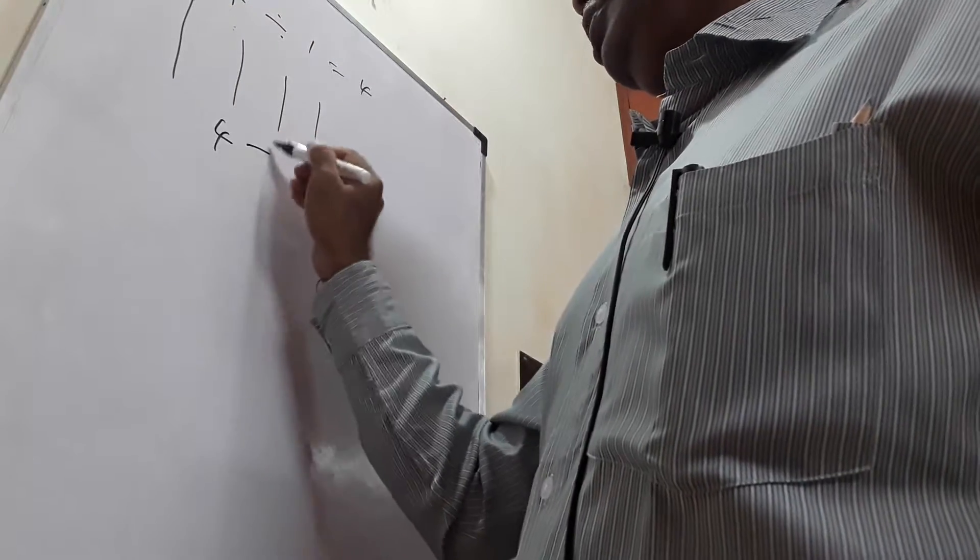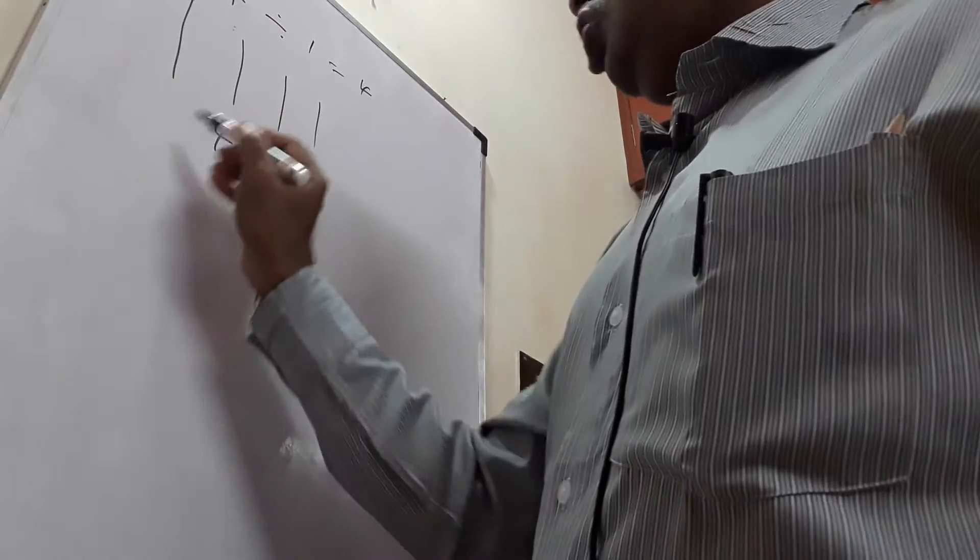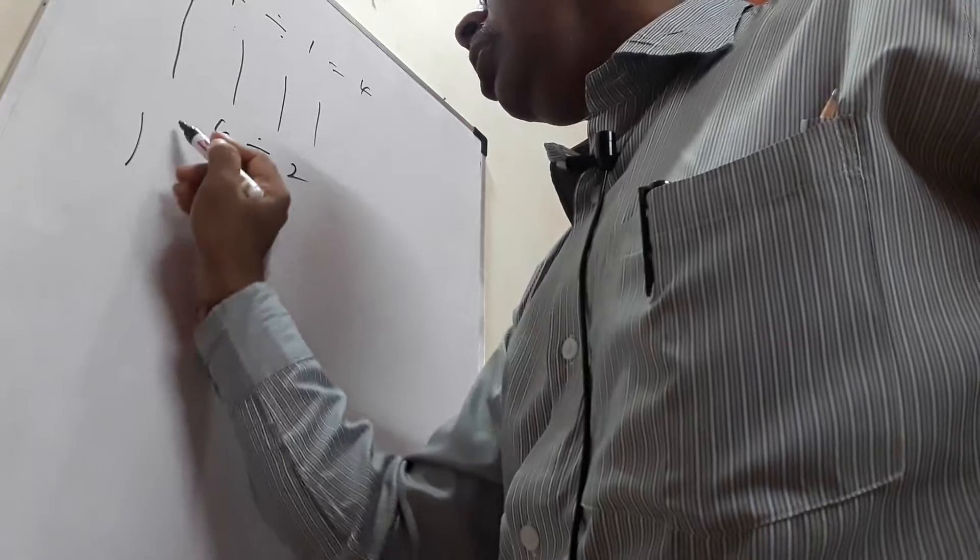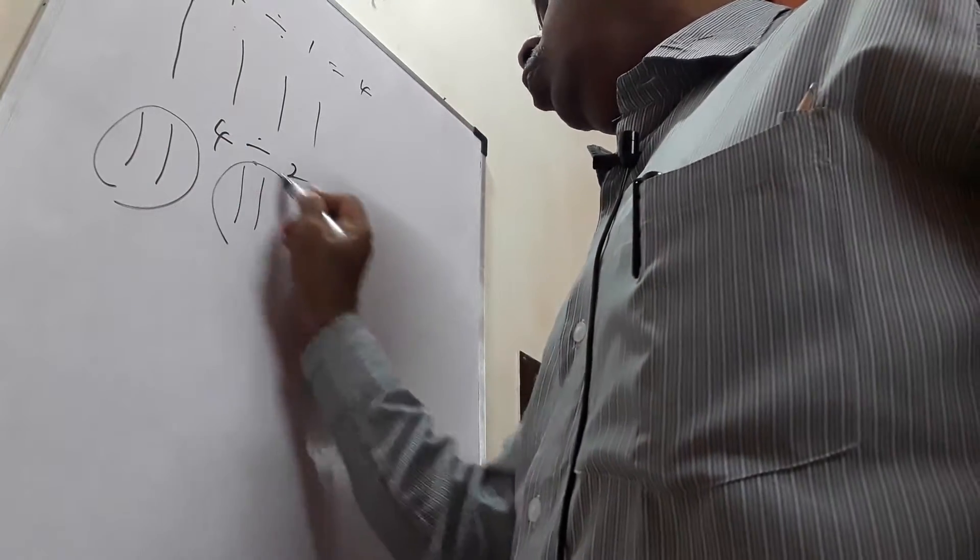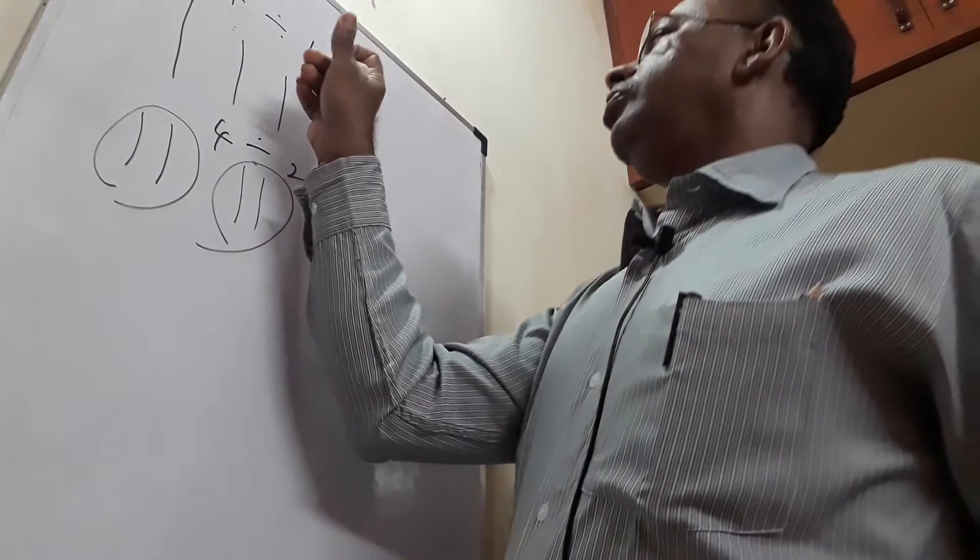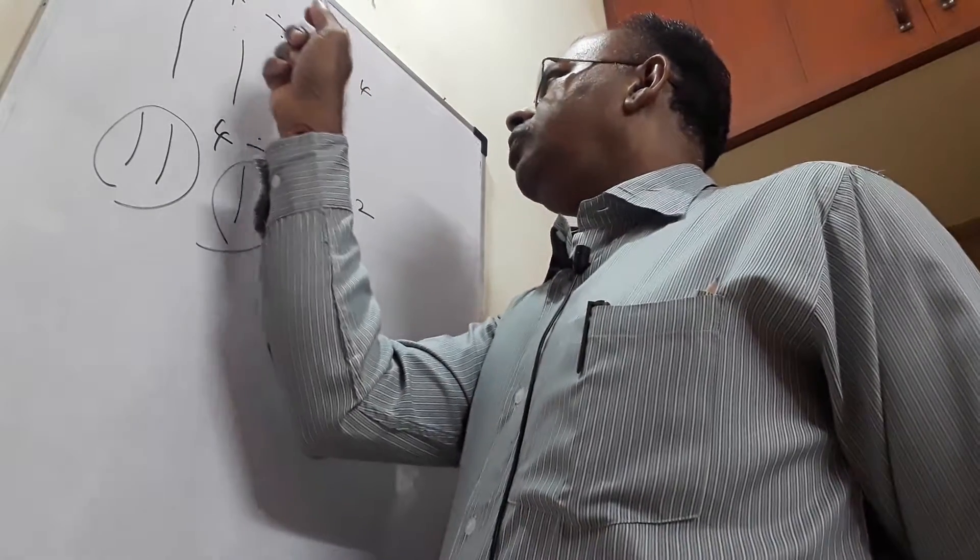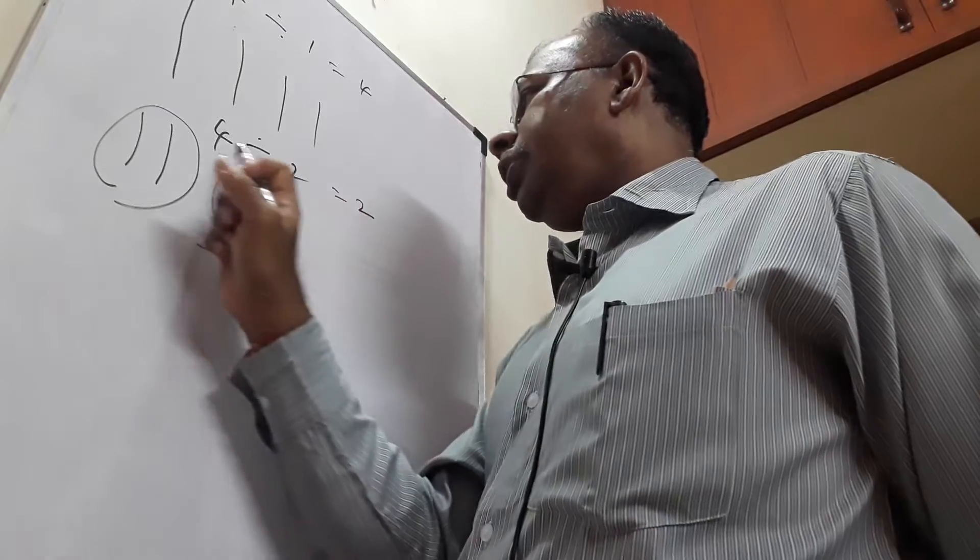Let us say 4 divided by 2. I am given 4 pencils. How many 2 combinations are there? 1, 2 combinations. Therefore 4 divided by 2 is equal to 2. Here I am trying to look at how many 1's are there in 4, how many 2's are there in 4.